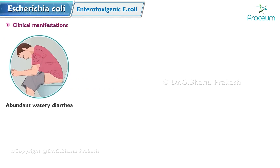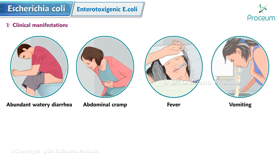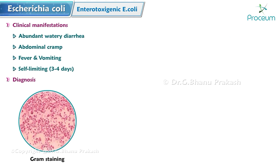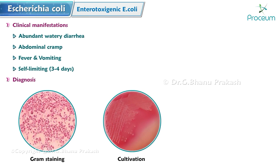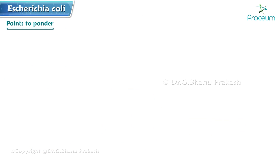Patients suffering from ETEC develop abundant watery diarrhea, abdominal cramps, fever, and vomiting. It is usually self-limiting in three to four days. Diagnosis is done by gram staining, which reveals no pus cells or red blood cells. Cultivation on MacConkey agar can also be done, as well as a test for toxigenicity.